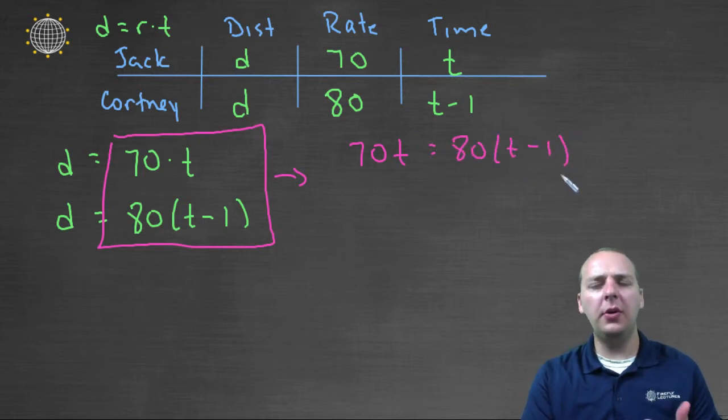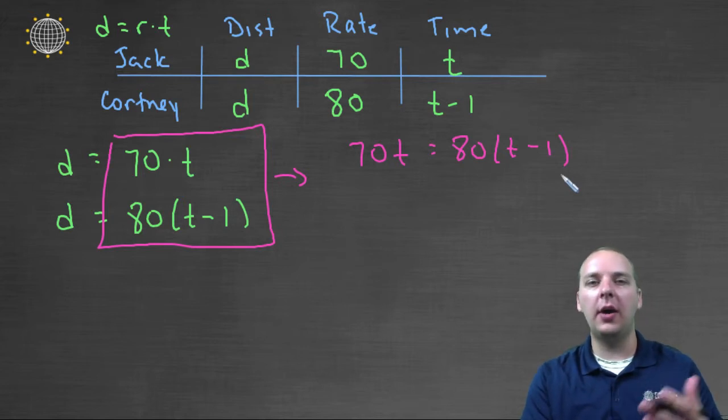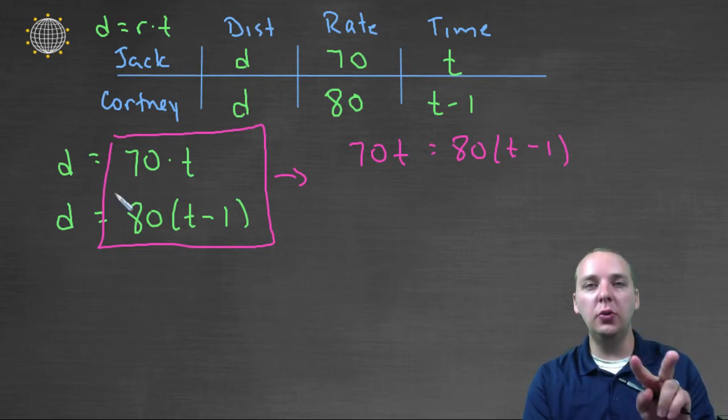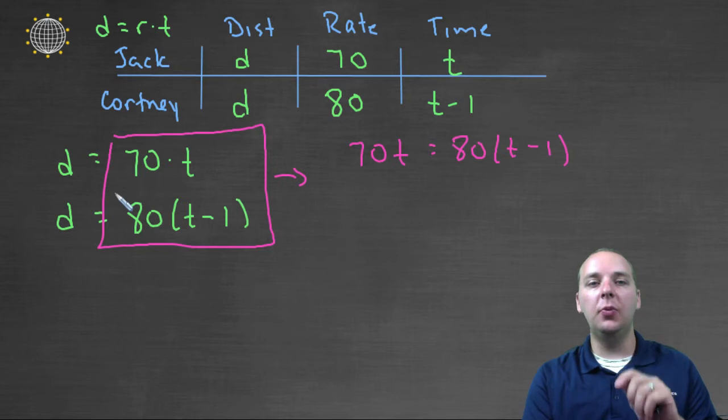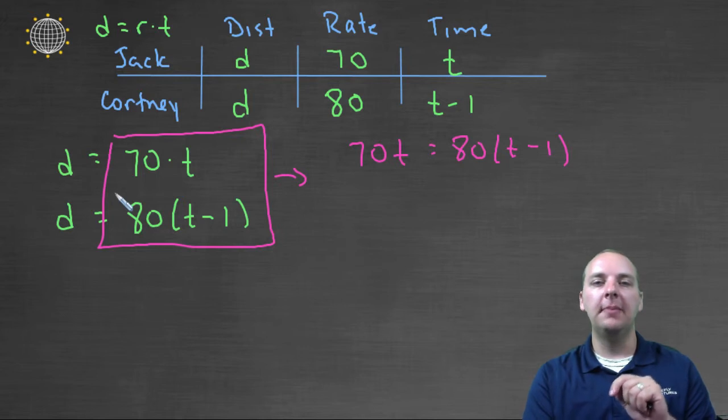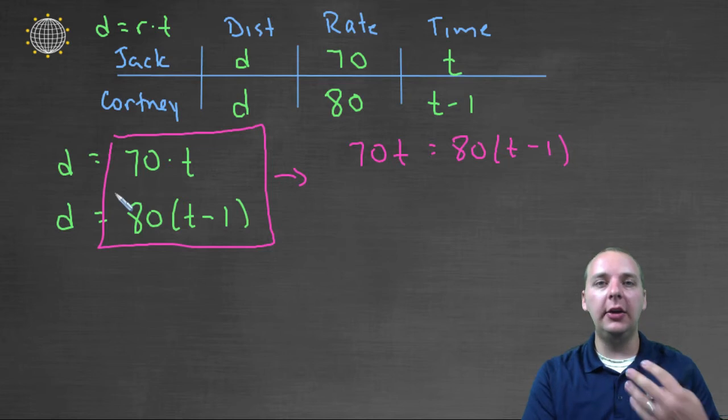Now why would I want to do that? What would make me think of doing that? Why do I care? What purpose does that serve? Well, see the problem with this over here was that it was two equations, and even worse, they had two variables each. I would prefer it to be one equation, and only have a single variable so that I can solve it, because I'm pretty good at solving linear equations that just have one variable.